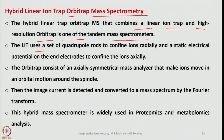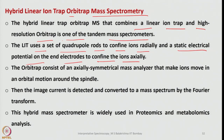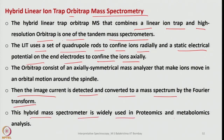The hybrid linear ion trap / orbit trap mass spectrometer combines a linear ion trap and a high-resolution orbit trap. The LIT uses a set of quadrupole rods to confine ions radially and a static electrical potential on end electrodes to confine ions axially. The orbit trap consists of an axially symmetrical mass analyzer that makes ions move in orbital motion around a spindle. The image current is detected and converted into a mass spectrum by Fourier transform. This hybrid mass spectrometer is widely used in proteomics and metabolomics analysis.